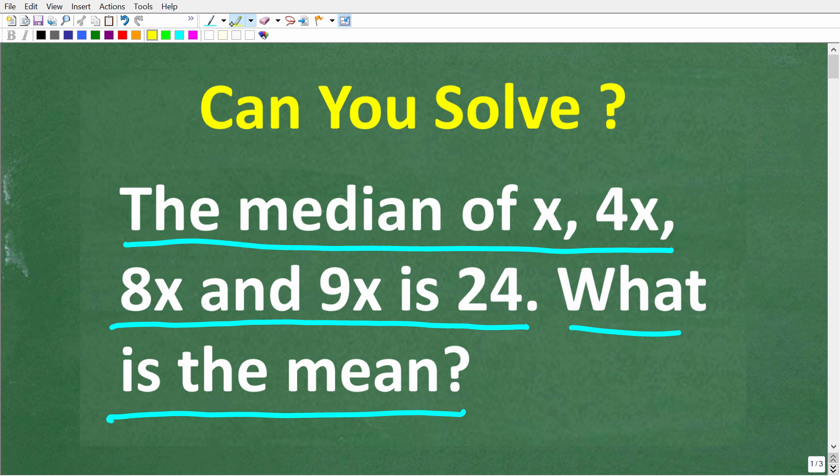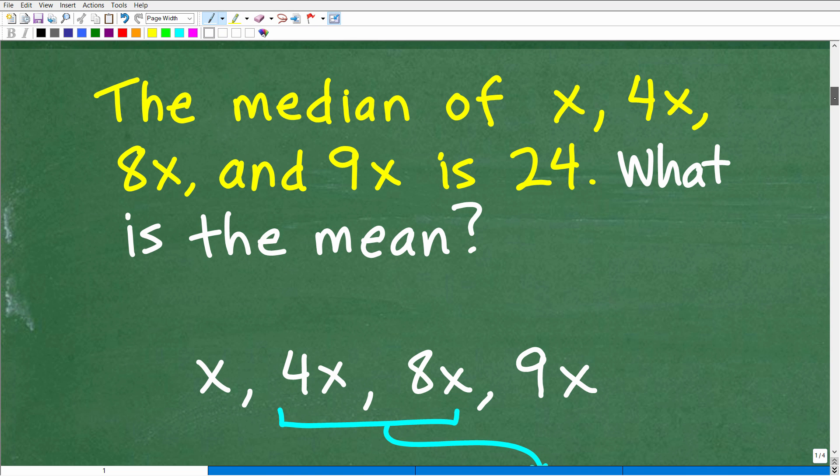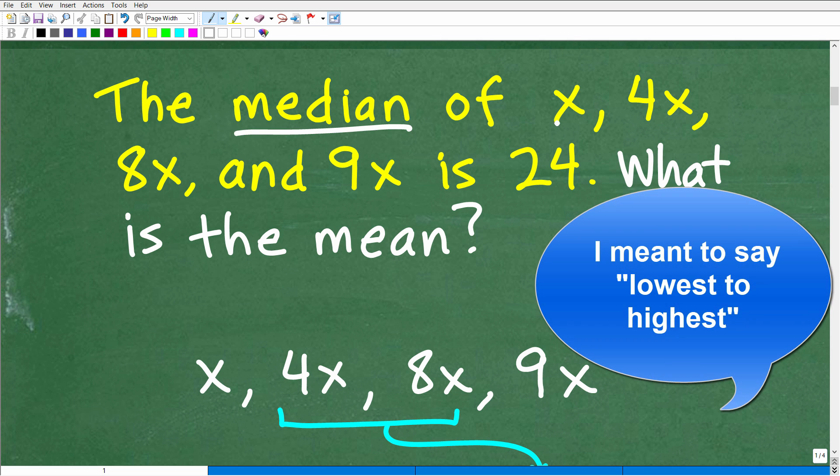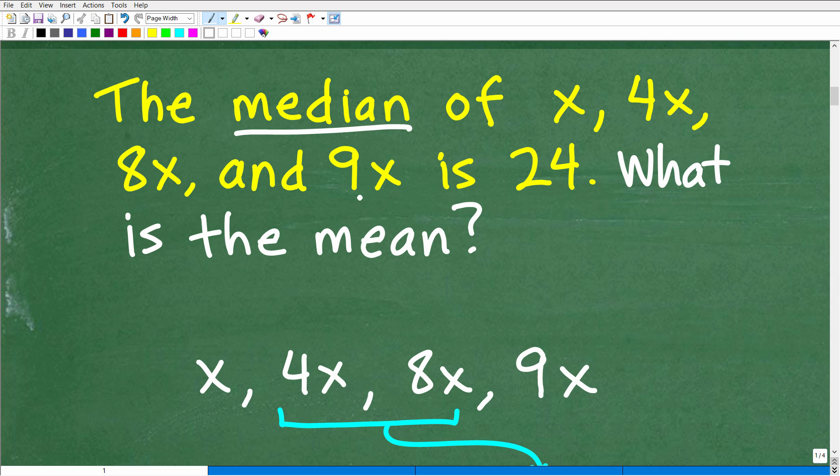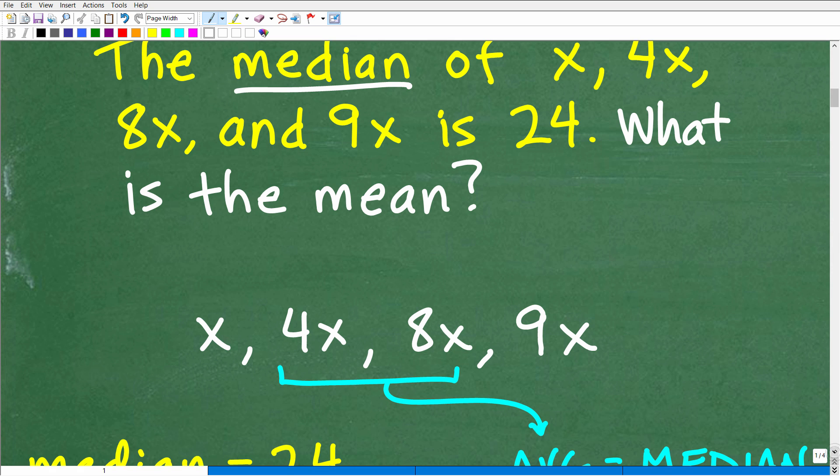So again, the question here is asking for the mean, which of course is the same thing as the average. And we're being told that we are talking about the median of this data set. Okay, so the median of these numbers is 24. So how do we solve this problem? We're going to have to break out your basic algebra skills. Not that difficult. So we are talking about the median. So we're going to want to order this information, our data from highest to lowest values.